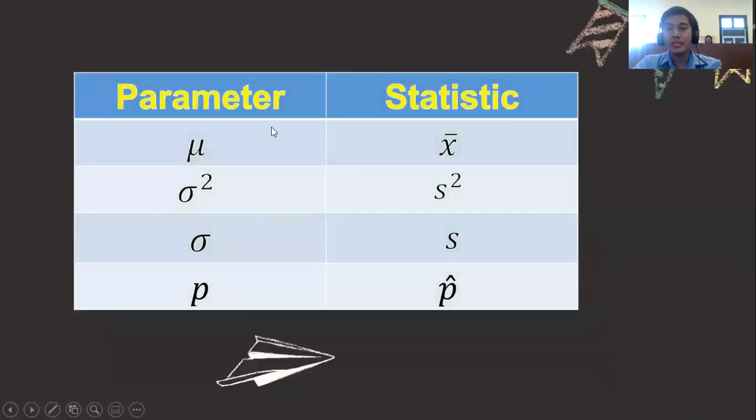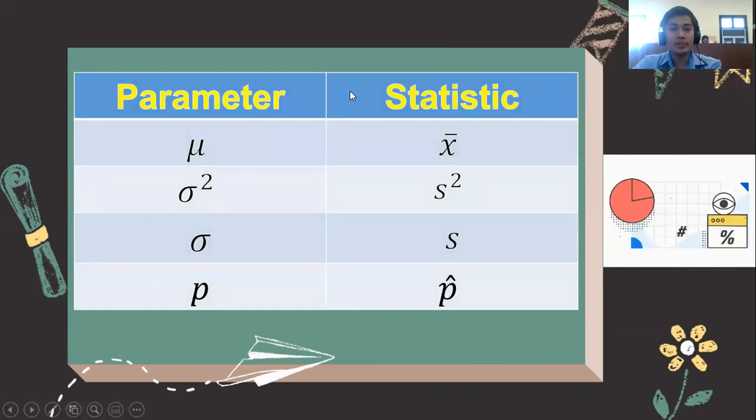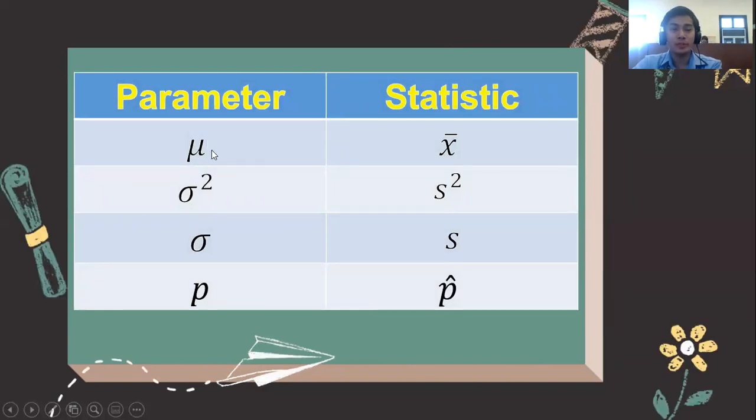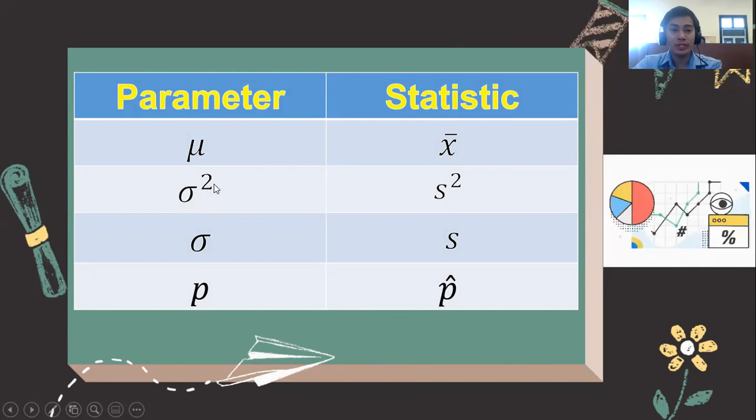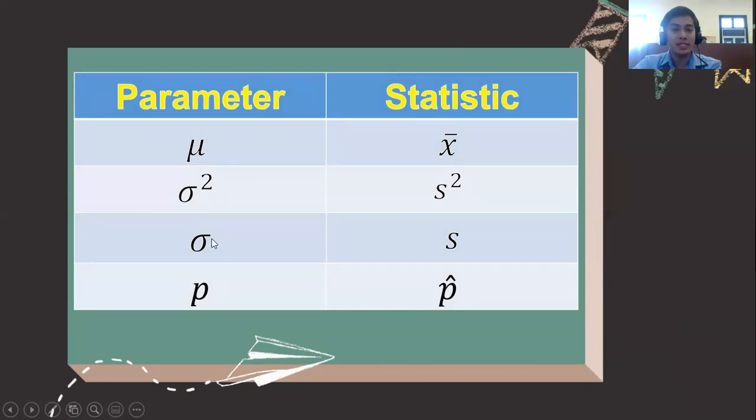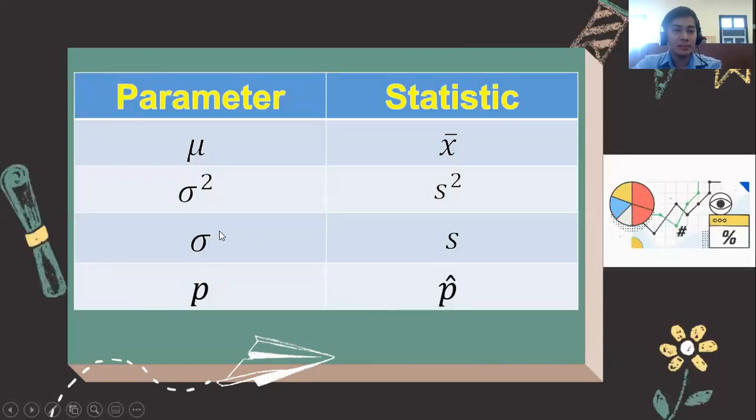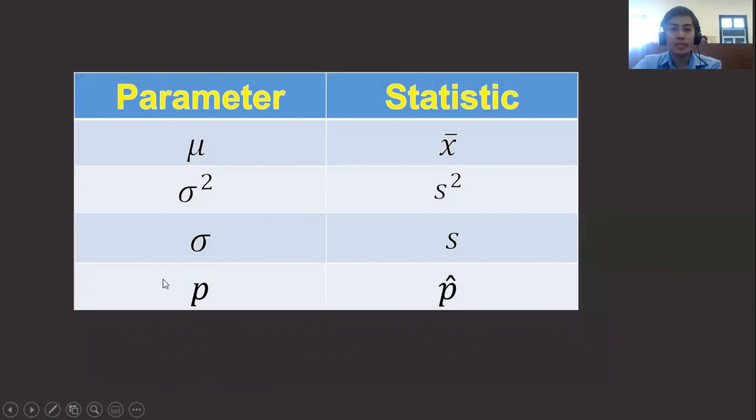To summarize, these are the symbols that describe the parameter: μ is the population mean, σ² is the population variance, σ is the population standard deviation, and p is the population proportion. Other symbols such as capital N describe the population size.